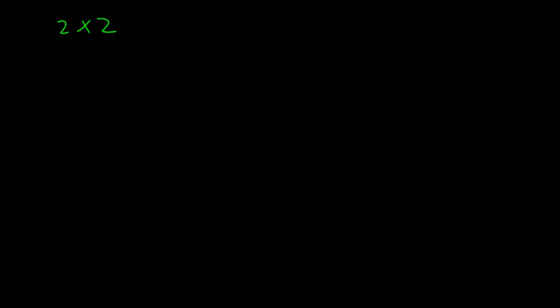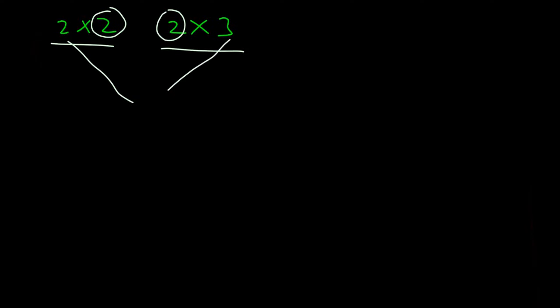We said that if we have a two-by-two matrix being multiplied by a two-by-three matrix, we can multiply these two matrices because the number of columns of the first matrix must be equal to the number of rows in the other matrix. And we said that the product we're going to get will be a two-by-three matrix. So I want us to look at more examples so that we can understand better.